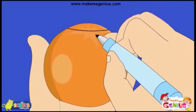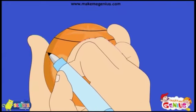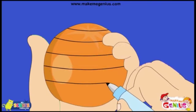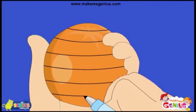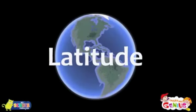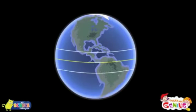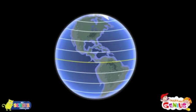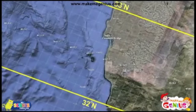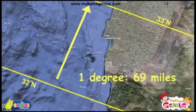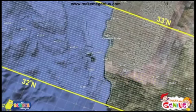If I draw lines horizontally on the skin of the orange, dividing it into horizontal slices, these are called parallels of latitudes. Latitudes are parallel lines that circle the earth from east to west. These lines are the same distance apart, about 69 miles.